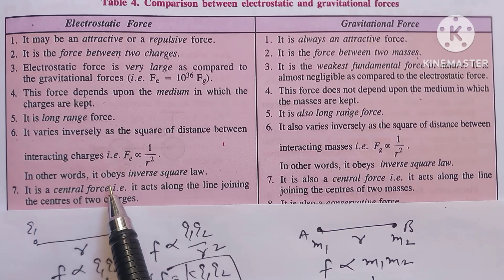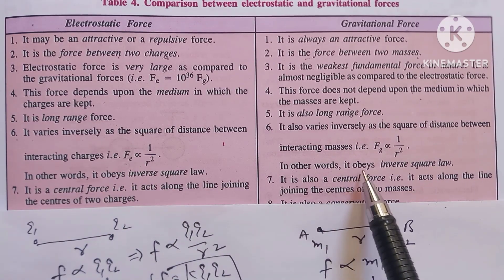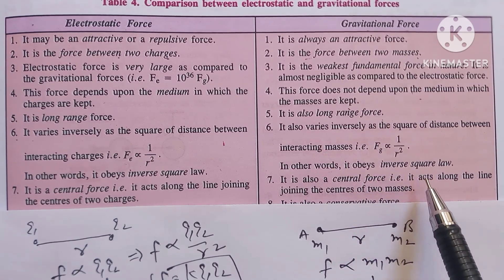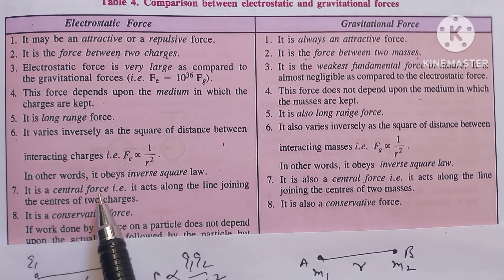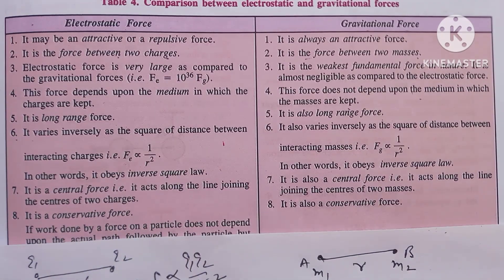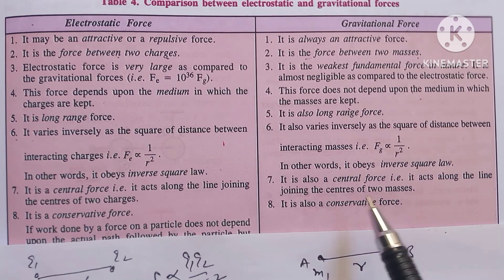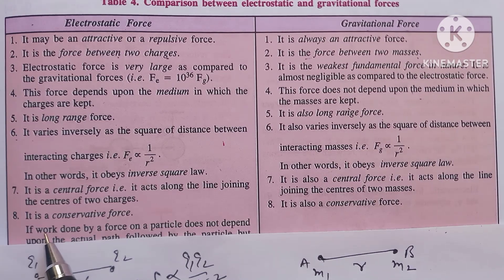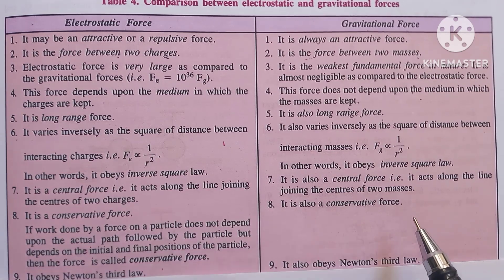In other words, electrostatic force obeys the inverse square law, and gravitational force also obeys the inverse square law. The next point about electrostatic force is that it is a central force and acts along the line joining the two charges; gravitational force also acts along the line joining the centers of two masses. Furthermore, electrostatic force is a conservative force, and gravitational force is also a conservative force.